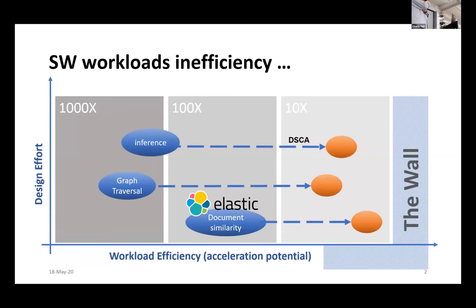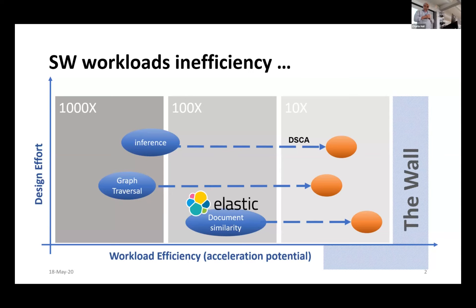Let's take a look at this problem from a higher perspective. Let's talk about software workloads inefficiency. There are workload classes or categories — I point to three: inference class in the blue sphere, graph traversal, and document similarity.